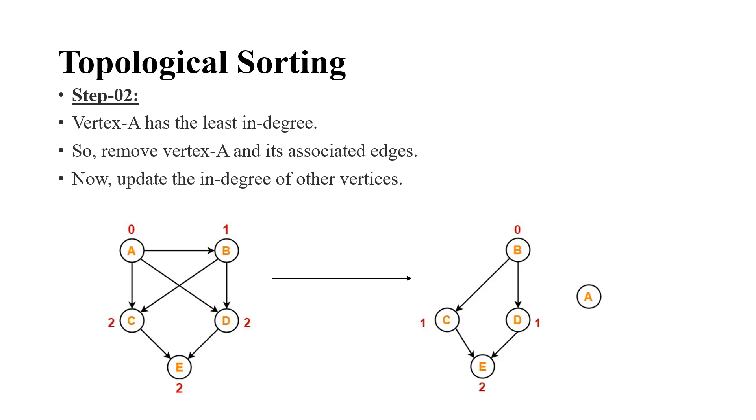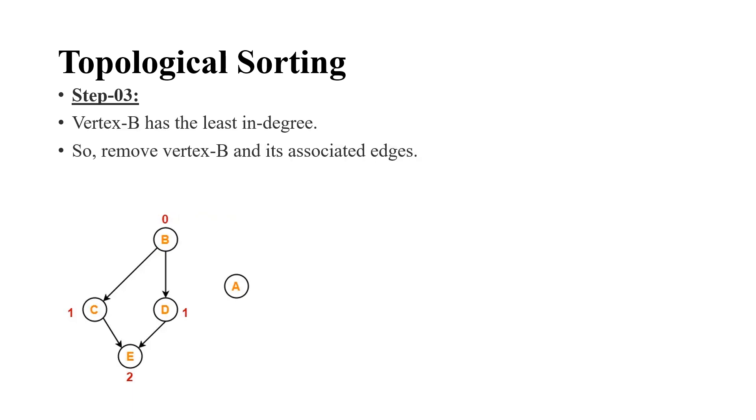Next step is we have to consider the next least indegree vertex. So, here we can see that B is having the least value and remove the vertex B and its edges and then update the indegree of other vertices.